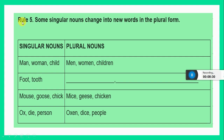Let's look at rule number 5. Some singular nouns change into new words in the plural form. Man, men. Woman, women. Child, children. Can you make the plural of foot and tooth? It's very easy — you have learnt it in grade 3, remember and then write. Mouse, mice. Goose, geese. Chick, chicken. Ox, oxen. Die, dice. Person, people. This is all about irregular plurals.